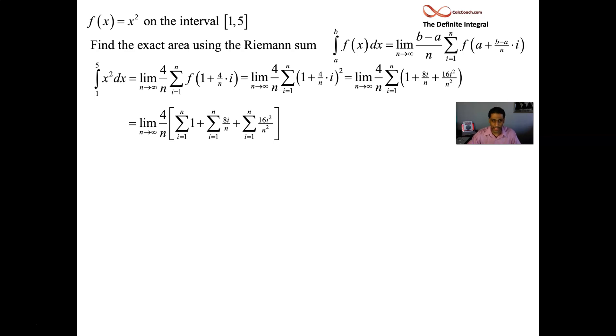Breaking up the sum and pulling out constants like eight over n and 16 over n squared. We have three sums color coded. The sum of one is just n. The sum of i equals one to n of i is n times n plus one over two. The sum of i squared is n times n plus one times two n plus one all over six. That comes from our toolbox of finite sums.